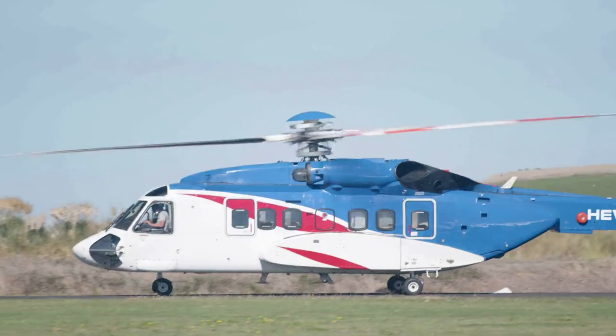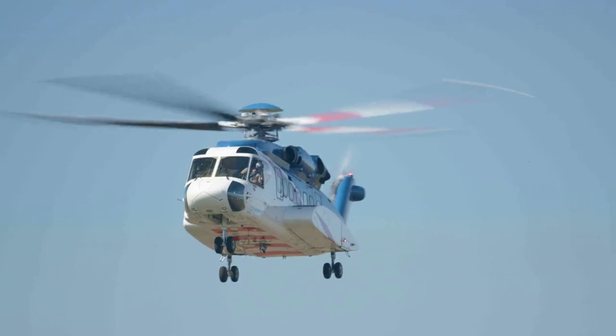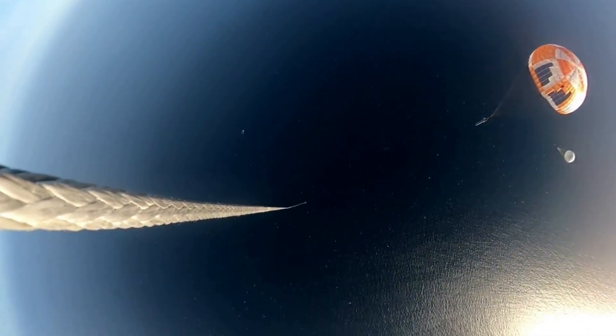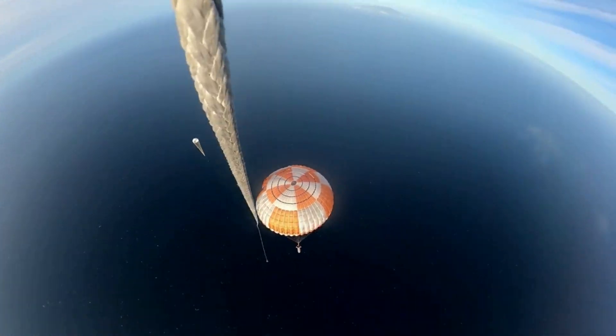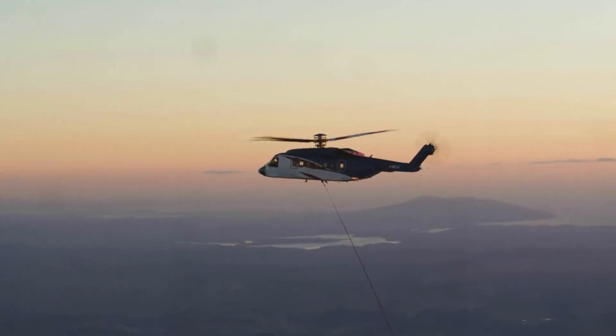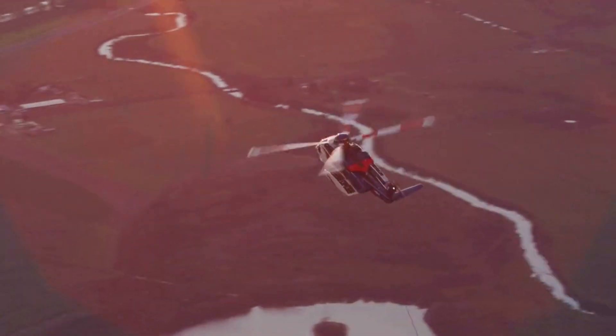However, Rocket Lab has been working hard to try and turn Electron into a partially reusable rocket by catching the Electron booster. Just a few days ago, the company hinted that the next booster catch attempt would happen before the end of the year. Success in the booster catch department could only help Rocket Lab's case as they reduce the cost per launch and improve launch cadence. At the same time, Electron is not built to launch, fly around the globe, and re-enter the atmosphere for another landing.